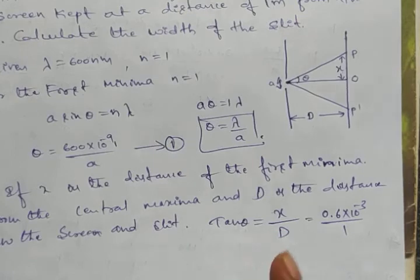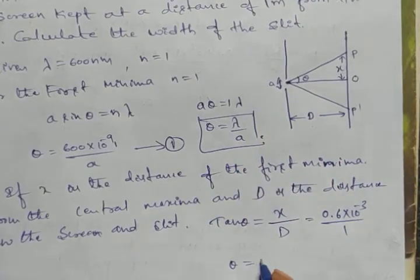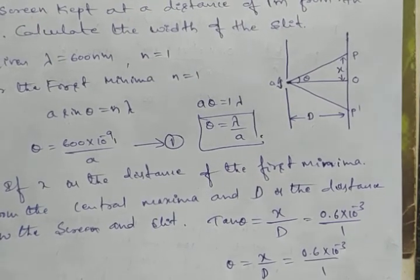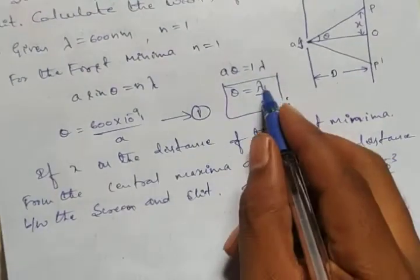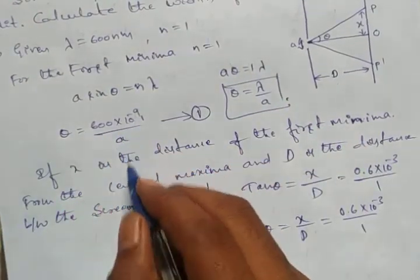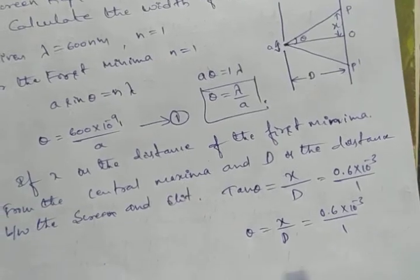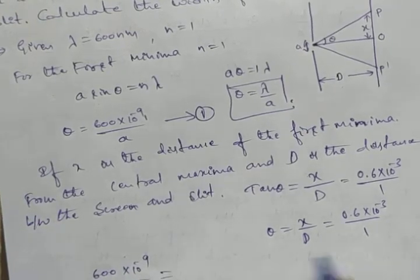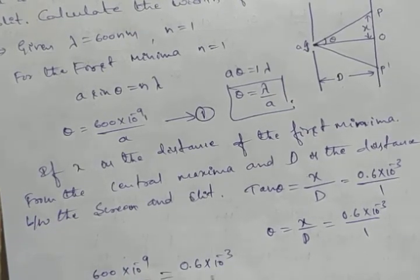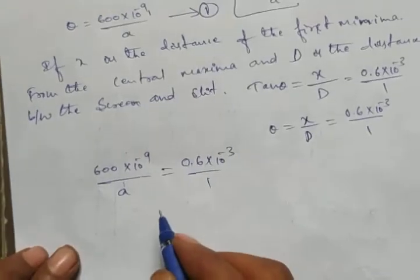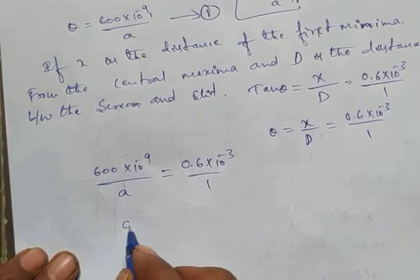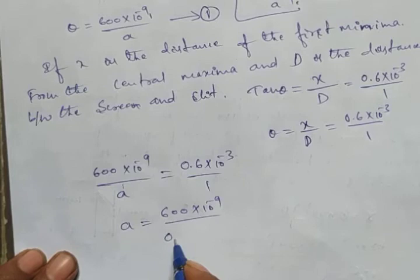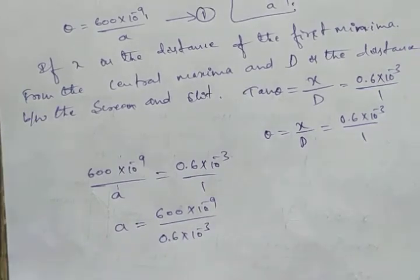Since tan theta is very small, we write theta equals x over d equals 0.6 into 10 to the power minus 3 divided by 1. Equating with equation one: 600 into 10 to the power minus 9 divided by a equals 0.6 into 10 to the power minus 3 divided by 1. We need to find a by cross multiplication.